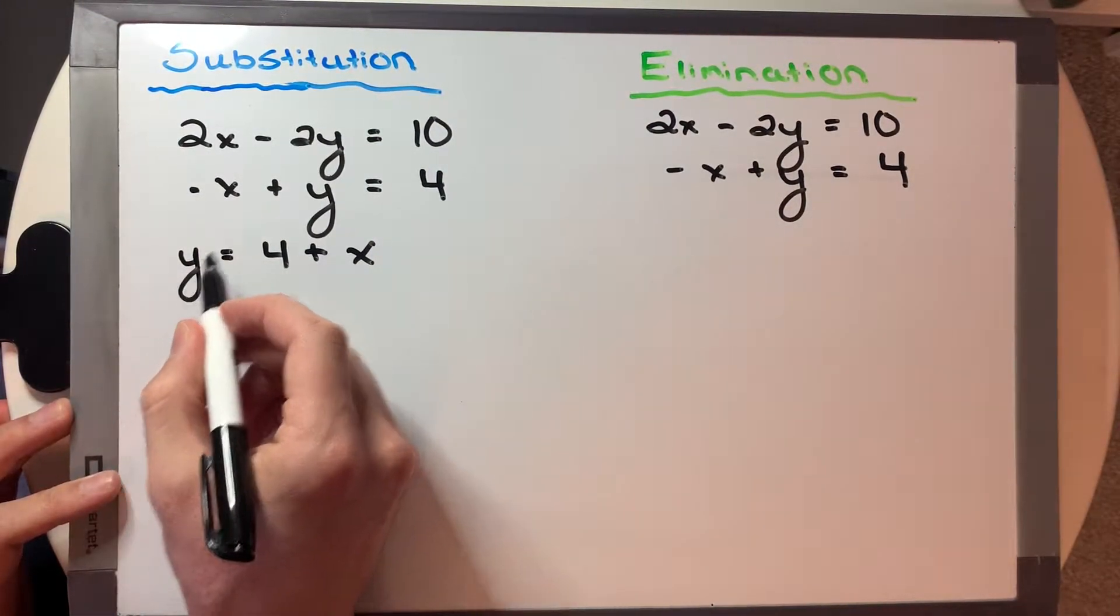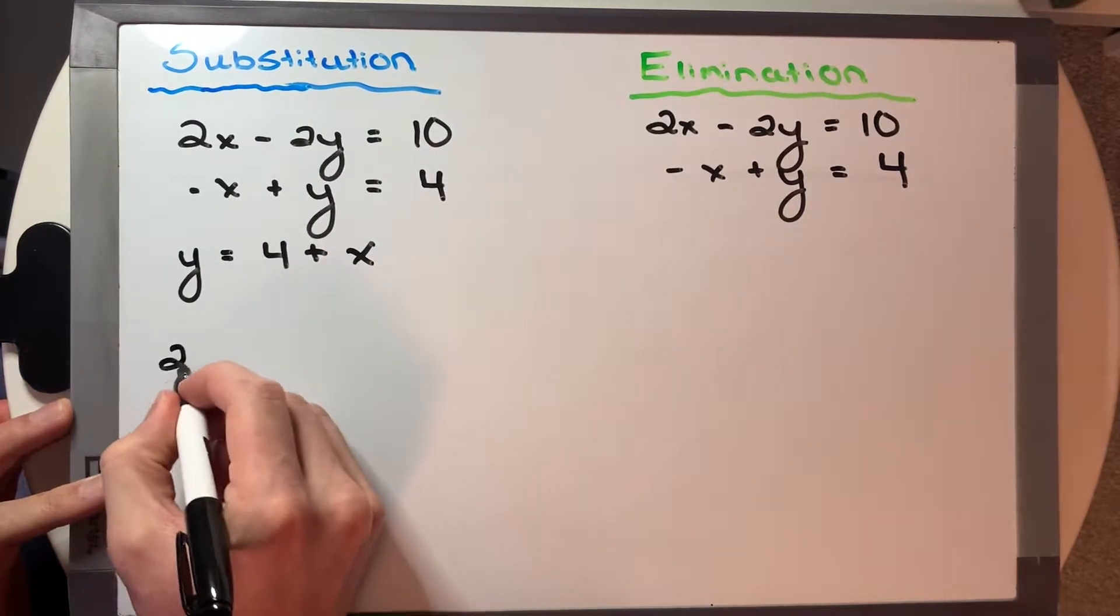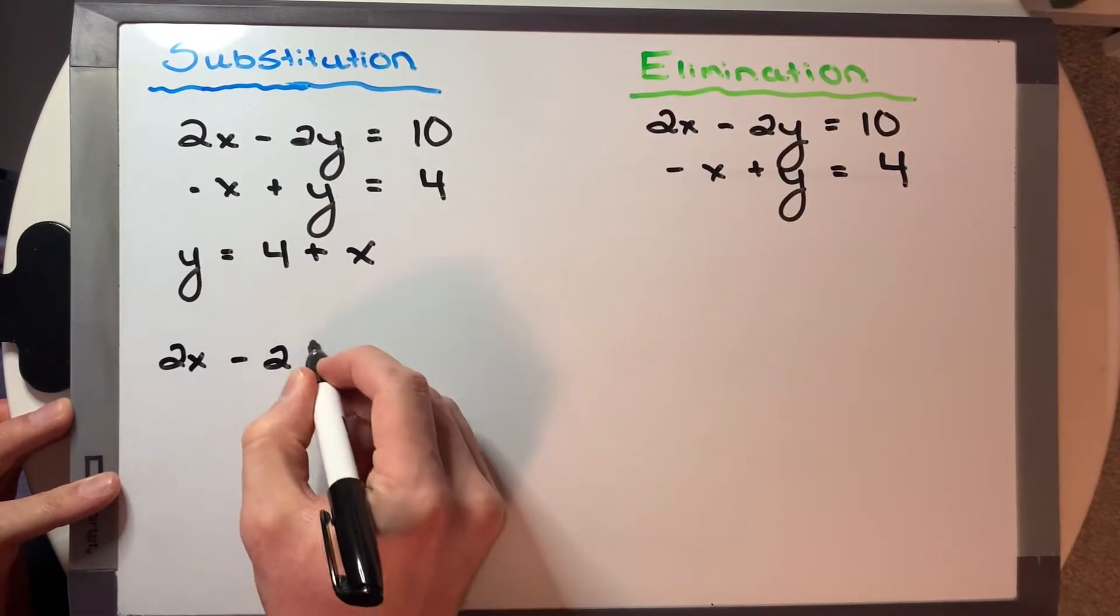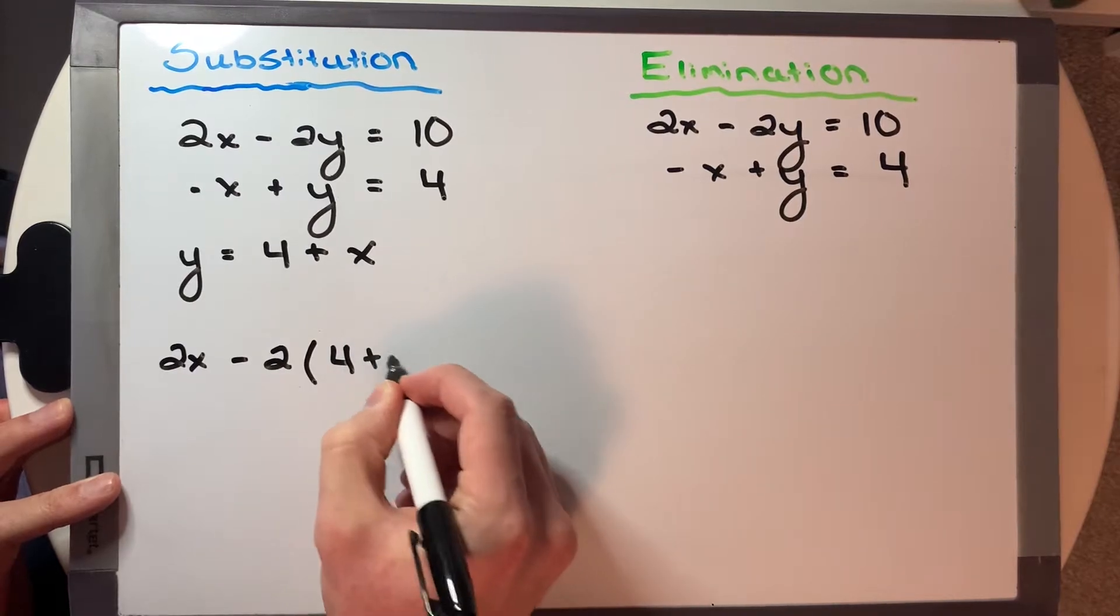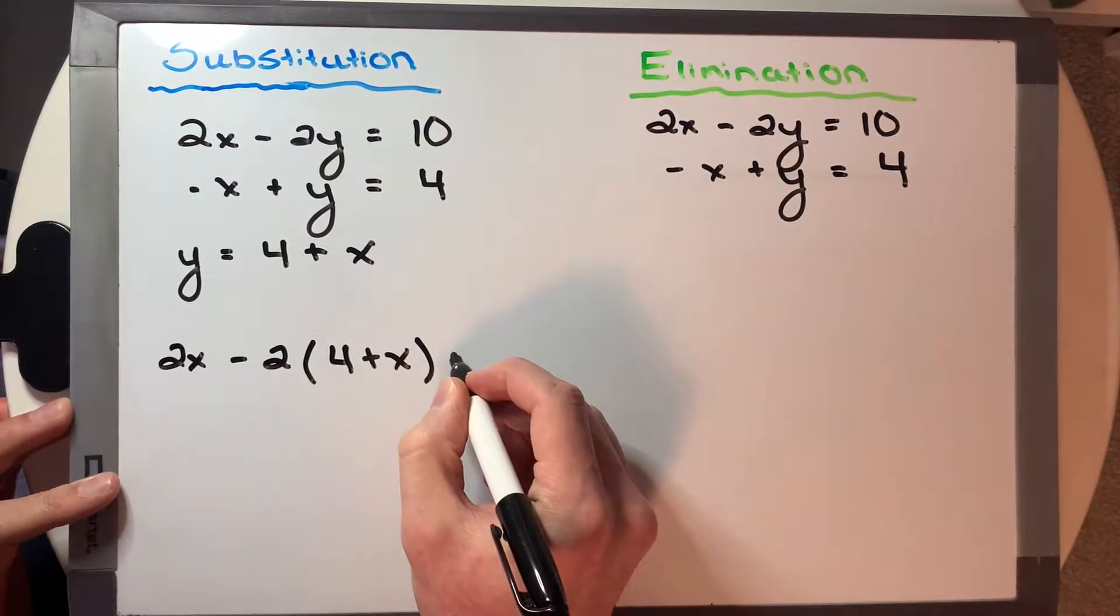So y is equal to 4 plus x by moving the x to the other side. And now I'm going to take this y and sub it into our top equation. So 2x minus 2 times (4 plus x), because we're subbing in the y we solved for, is equal to 10.